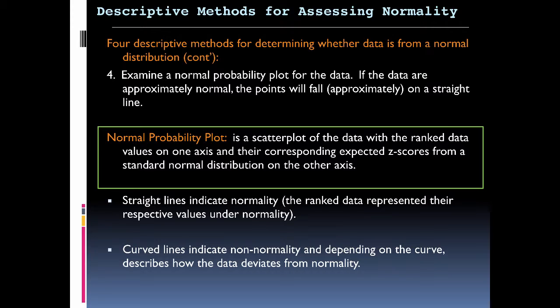A normal probability plot is going to give you a scatter plot with values on one axis and the corresponding z-scores on the other. If we have a straight line there, then we should expect to see normality. We're looking for something with a straight line. If we have curved lines, then we do not have a normal distribution.